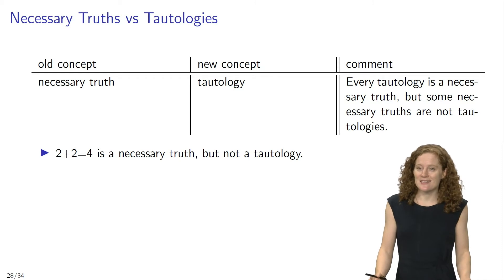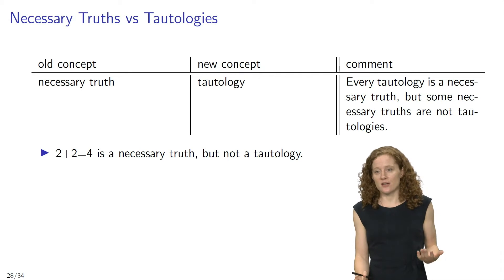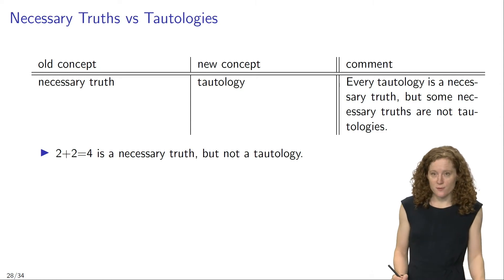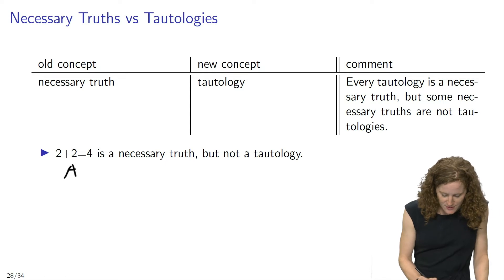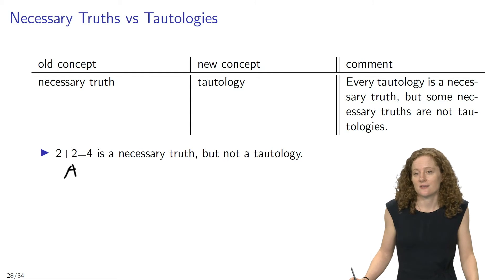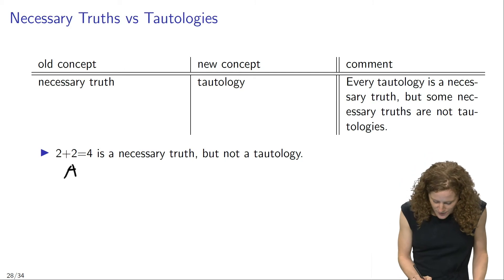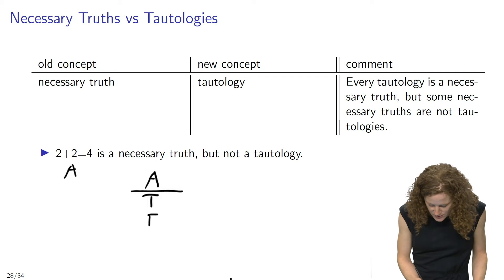However, this sentence is not a tautology, as we may find out when we construct the truth table of this sentence. '2 plus 2 equals 4' is an atomic sentence, so I'm going to symbolize it by the capital letter A. And now we know that when we construct a truth table for just one atomic sentence, this truth table is going to contain two rows, one for each of the possible valuations.